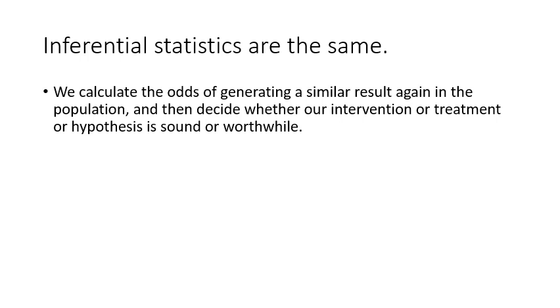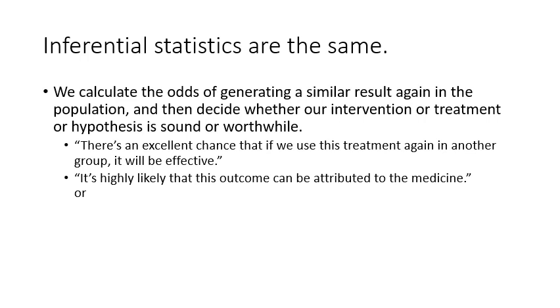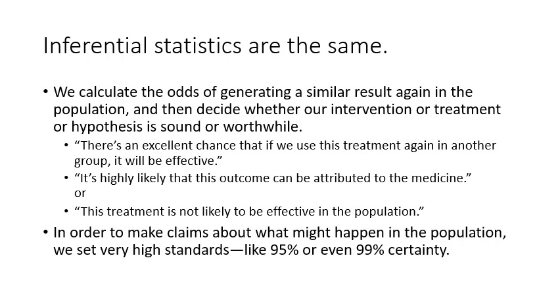Inferential statistics are the same. We calculate the odds of generating a similar result again in the population and then decide whether our intervention or treatment or hypothesis is sound or worthwhile. So here's a quote: There's an excellent chance that if we use this treatment again in another group, it will be effective. That's what our conclusions in inferential statistics can tell us. Or, it's highly likely that this outcome can be attributed to the medicine, or this treatment is not likely to be effective in the population. In order to make claims about what might happen in the population, we set very high standards like 95% certainty or even 99% certainty in some disciplines. We want to be very sure that our conclusions are accurate.